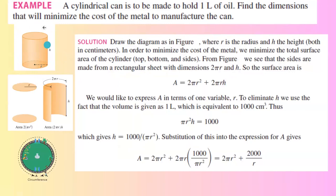Here you have a can with height h and radius r. If you cut this can, it can be formed by folding a rectangular metal sheet and two circular shapes.